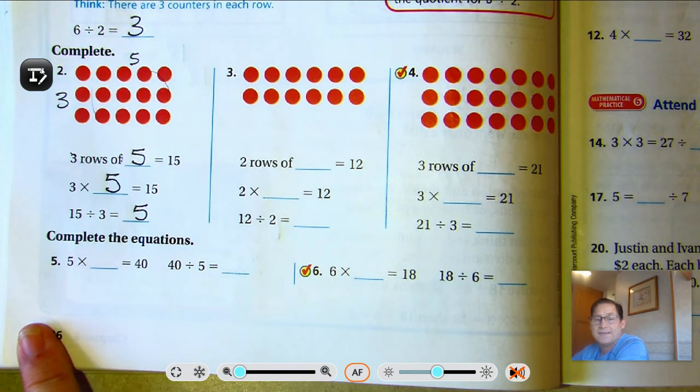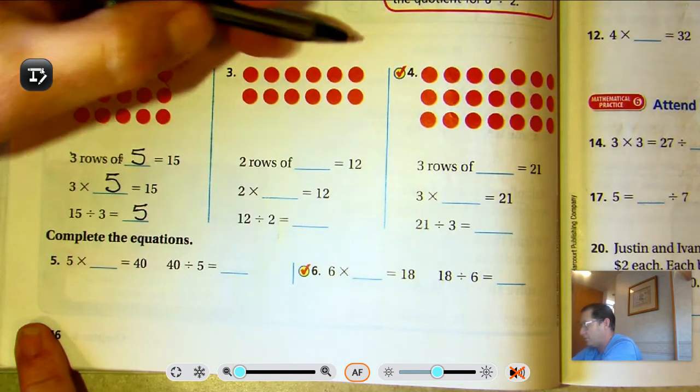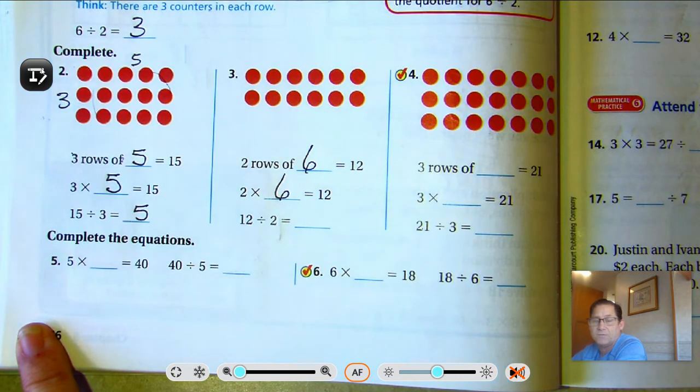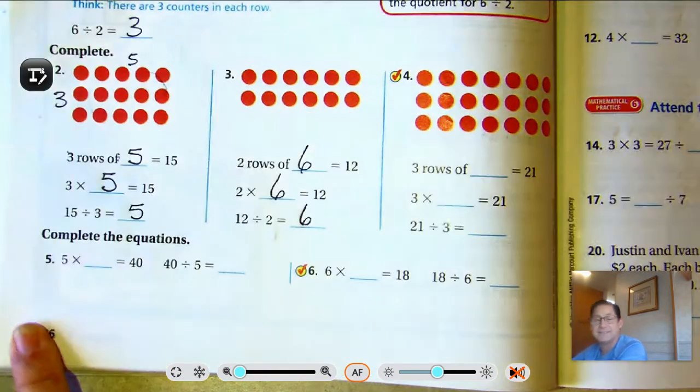Two rows of what equals 12? Six. Two times six is 12. If two times six is 12, 12 divided by two is six.